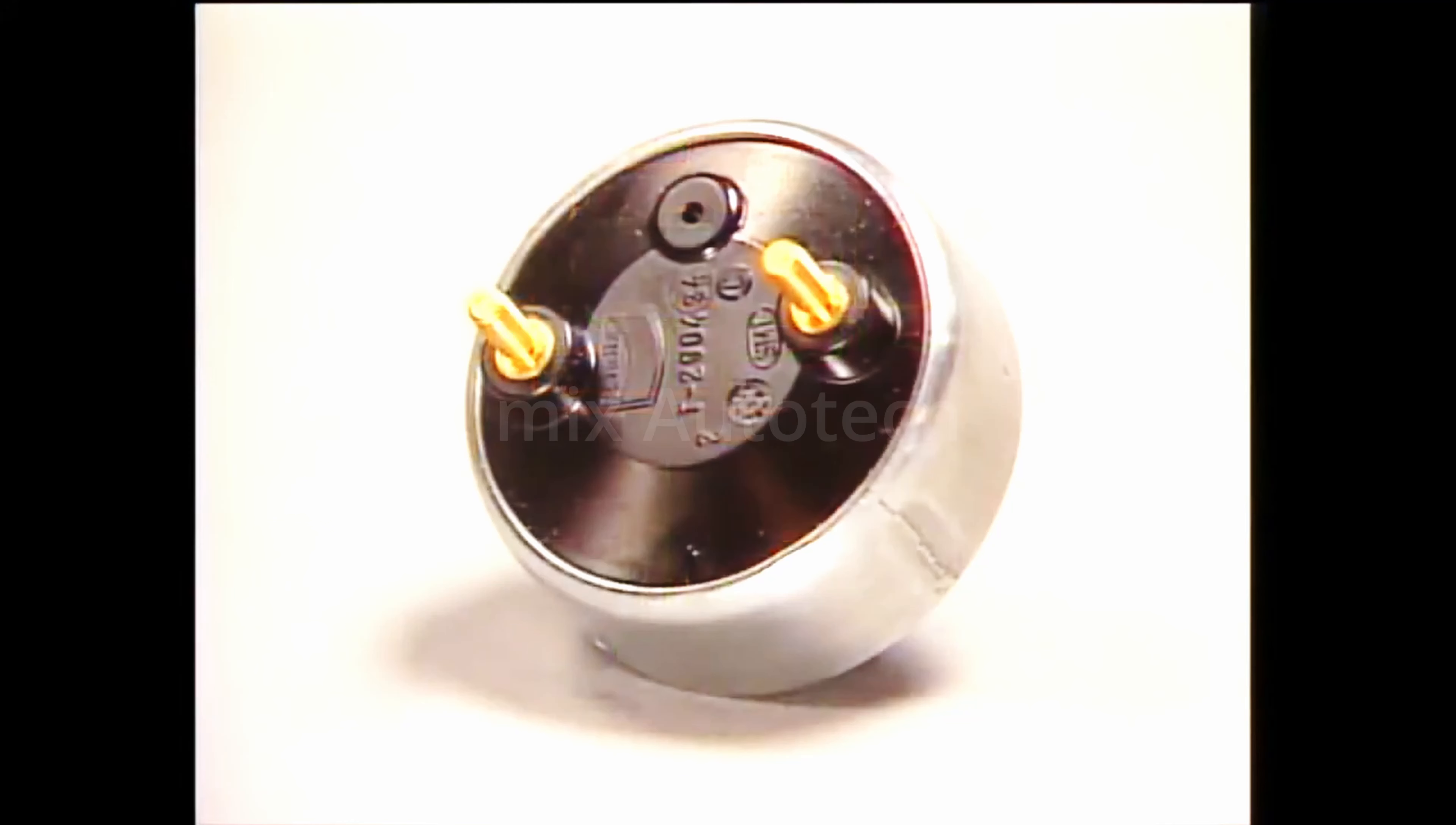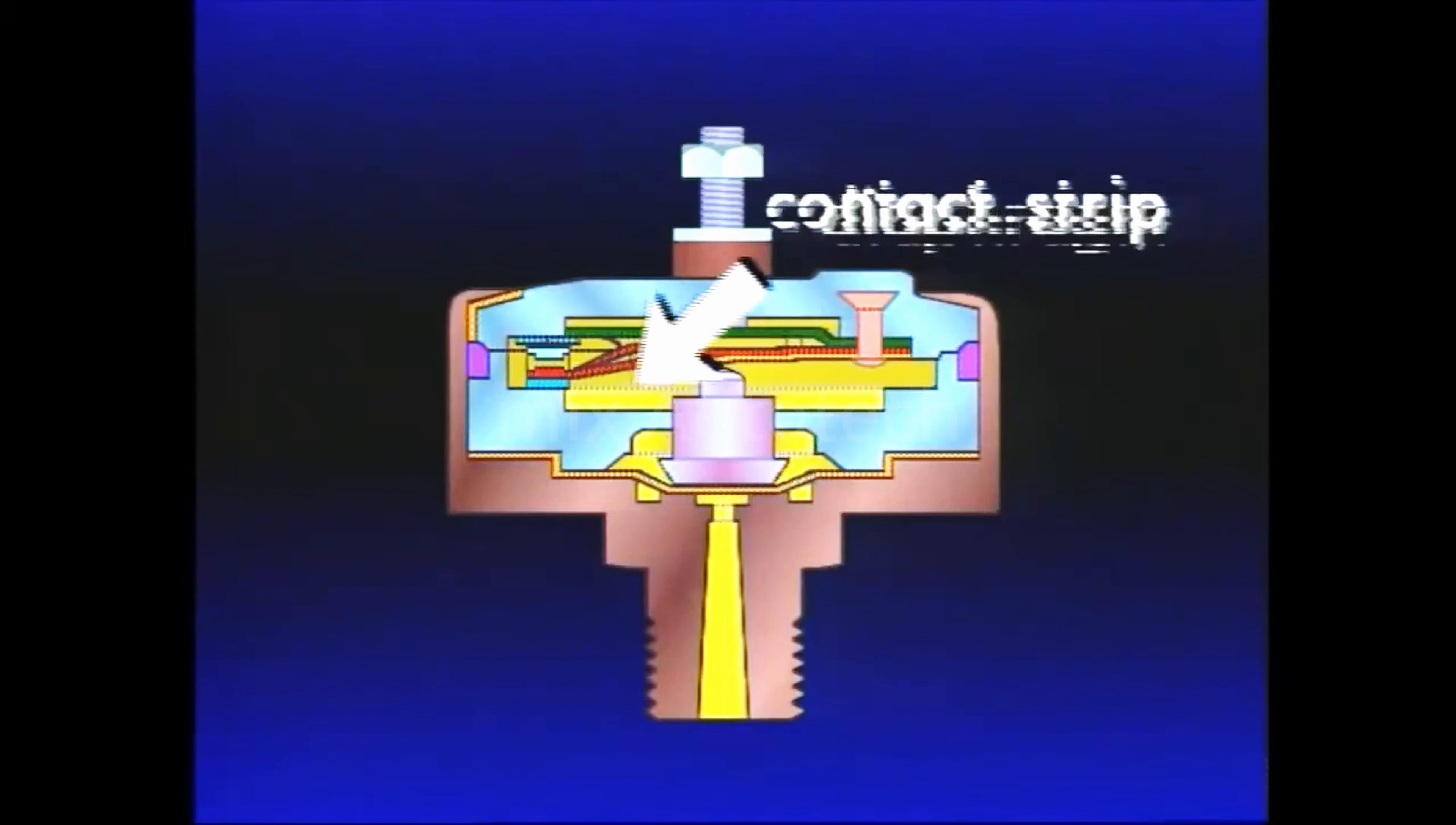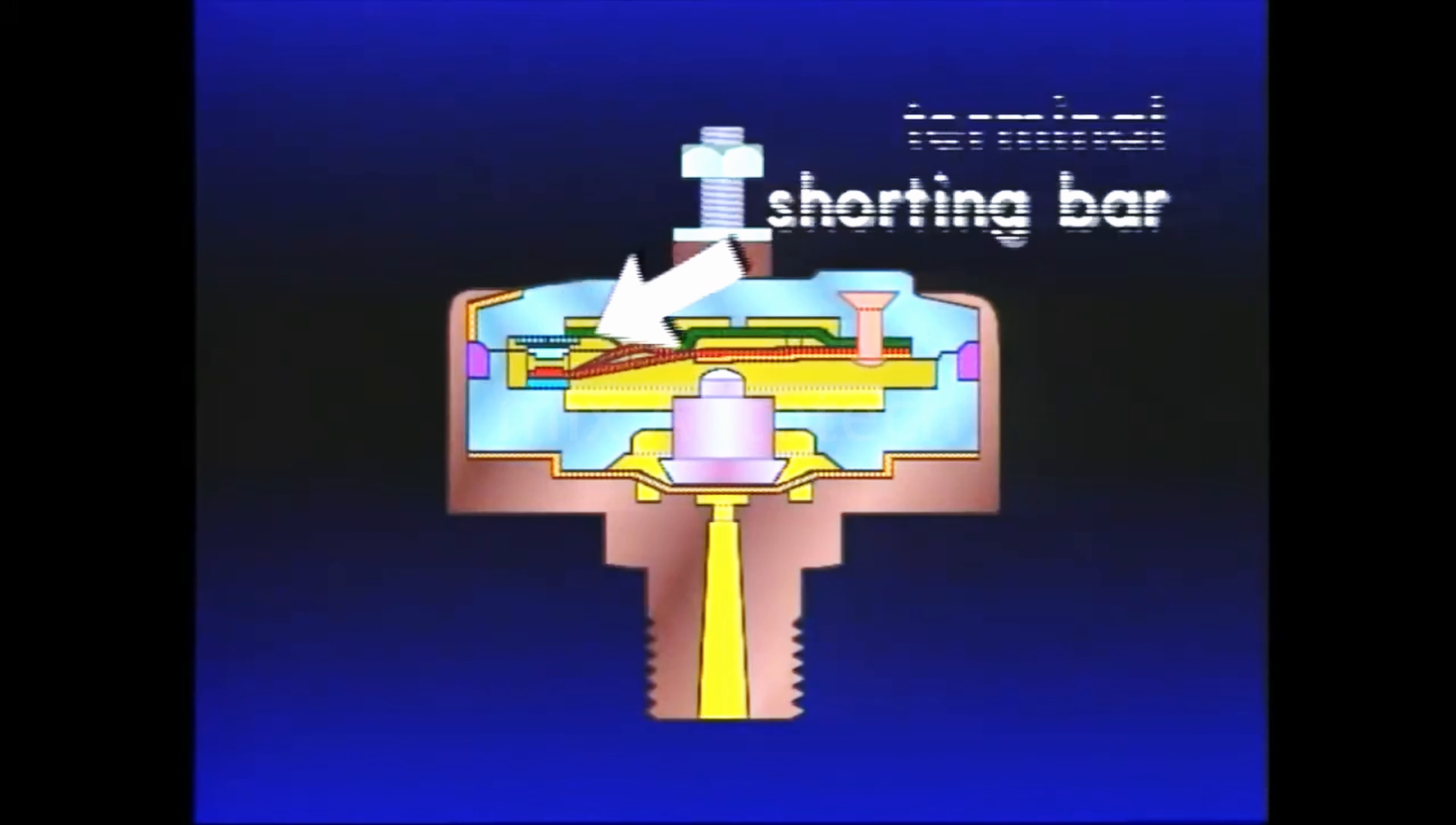The Bendix SL5 stoplight switch is comprised of a body, a non-removable, non-metallic cover, piston, diaphragm, two contact strips with attached terminals, and a shorting bar.